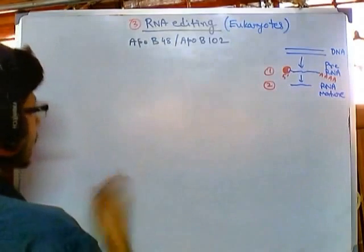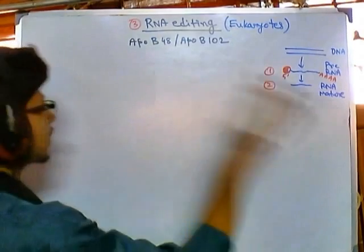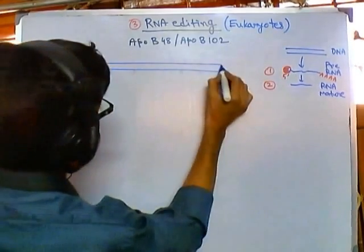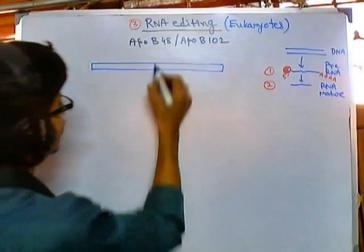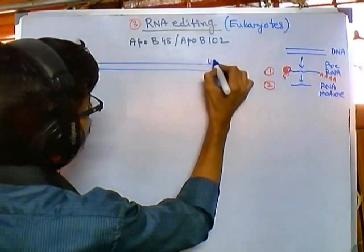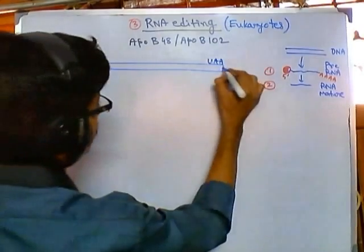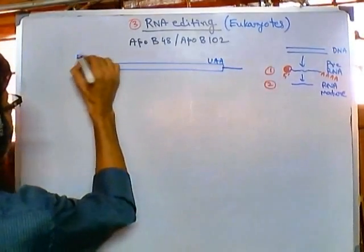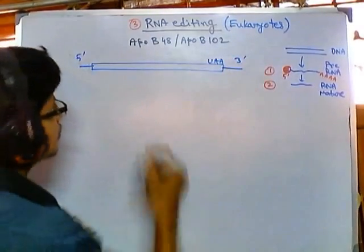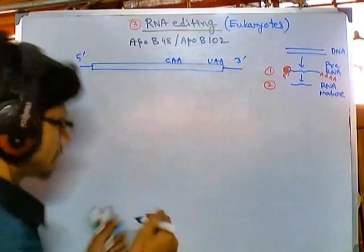Let's start with the RNA. So suppose this is our RNA segment. In this RNA segment we have regions — here we have a terminal signal, and they must terminate at that particular point. This is 5 prime and this is 3 prime. Somewhere in the middle we are having a CAA sequence, and there are other sequences present as well.